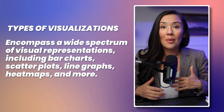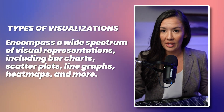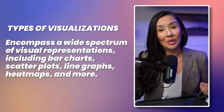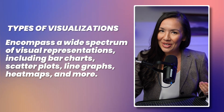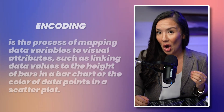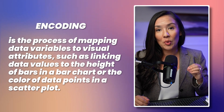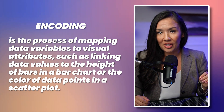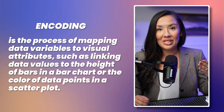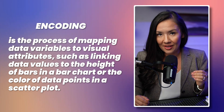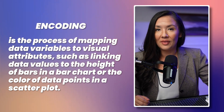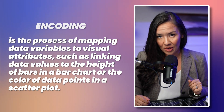Types of data visualizations encompass a wide spectrum of visual representations, including bar charts, scatter plots, line graphs, key maps, and many more. Encoding is a process of mapping data variables to visual attributes, such as linking the data values to the height of a bar in a bar chart, or the color of a data point in a scatter plot.